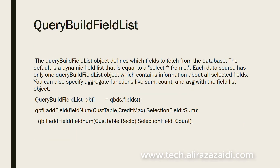Next is QueryBuildFieldList. We can provide the list of fields which will be available when the query executes. If we do not define a QueryBuildFieldList in a query, then all fields will be fetched from each table buffer when we execute the query. Otherwise, we define query fields and assign them to each data source. Only one field list is available per data source.